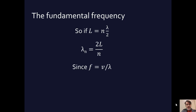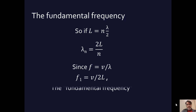Since frequency equals velocity divided by wavelength — velocity is in meters per second, wavelength in meters, so frequency comes out in cycles per second — if we substitute lambda equals 2L/N into this, we find that the fundamental frequency, where N equals 1, equals the velocity of the string divided by 2L. This is the bottom base frequency that the string can produce, called the fundamental frequency.